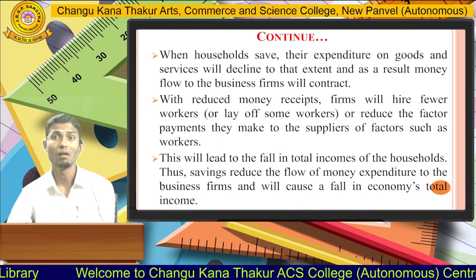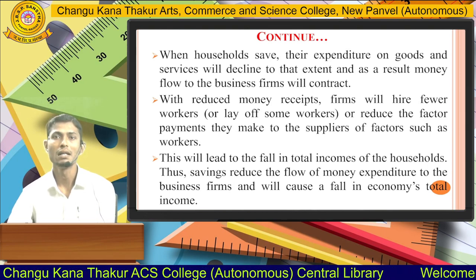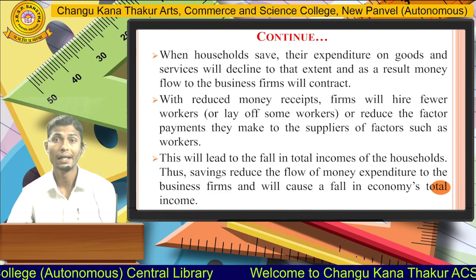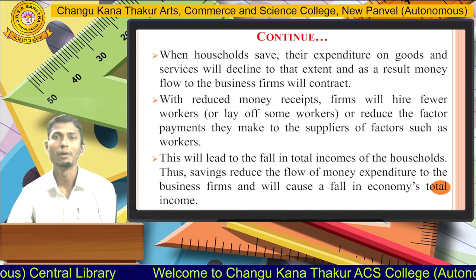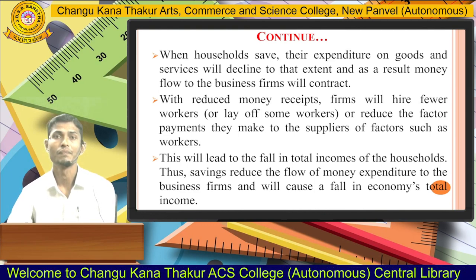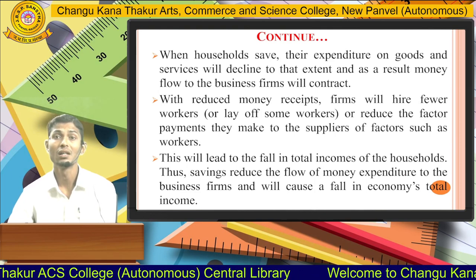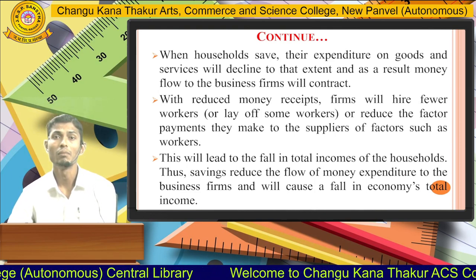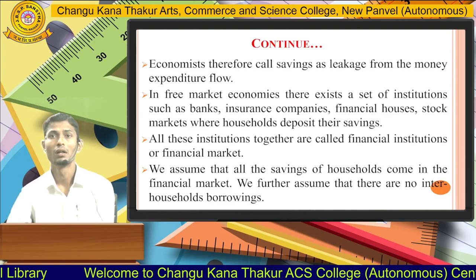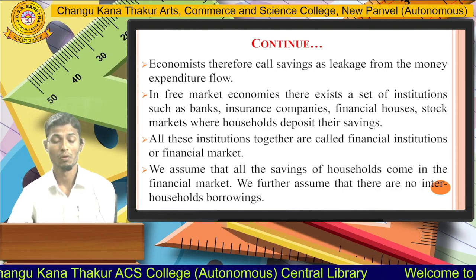When households save, their expenditure on goods and services will decline, and as a result money flow to the business firm will contract. With reduced money receipts, firms will hire fewer workers, lay off some workers, or reduce the factor payments they make to suppliers of factors such as workers. This will lead to a fall in total income of households. Thus savings reduce the flow of money expenditure to business firms and cause a fall in the economy's total income. Economists therefore call saving a leakage from the money expenditure flow.